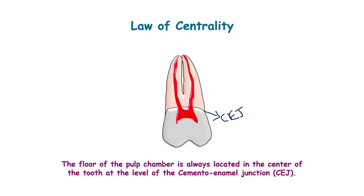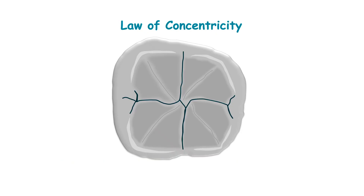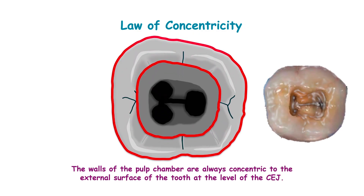The yellow line indicates the floor of the pulp chamber. The next law of centrality states that the walls of the pulp chamber are always concentric to the external surface of the tooth at the level of the cemento-enamel junction. This is the external surface of the tooth, and this is the walls of the pulp chamber — both are concentric to each other.